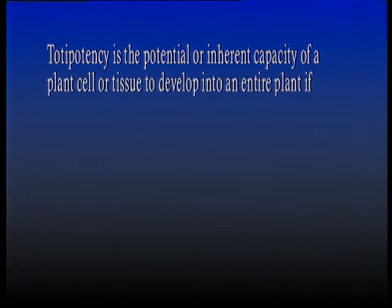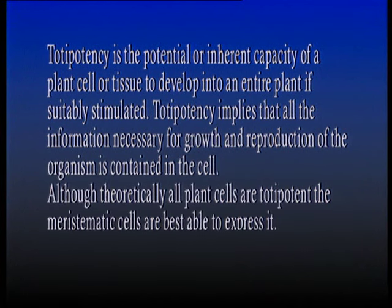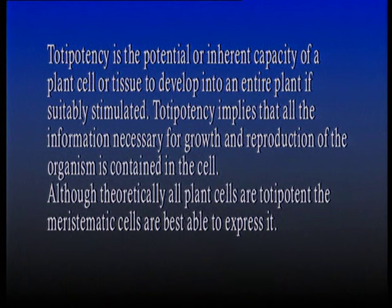The idea of plant tissue culture goes back to the turn of the century when a German scientist put forward the theory of cell totipotency. Totipotency is the potential or inherent capacity of a plant cell or tissue to develop into an entire plant if suitably stimulated. Totipotency implies that all the information necessary for growth and reproduction of the organism is contained in the cell. Although theoretically all plant cells are totipotent, the meristematic cells are best able to express it.